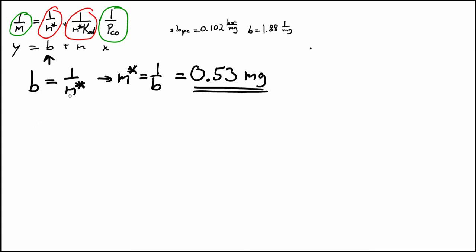So we know the slope. I'm just going to write the word slope rather than use the symbol M because we could confuse it with the mass otherwise. So the slope is equal to 1 over M-star times K. So we solve for K.